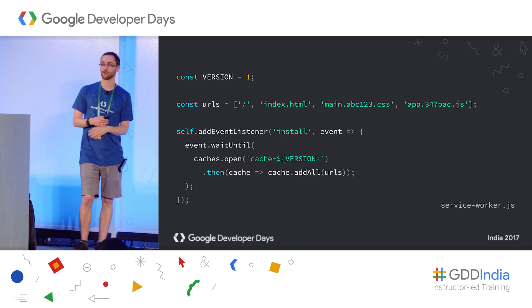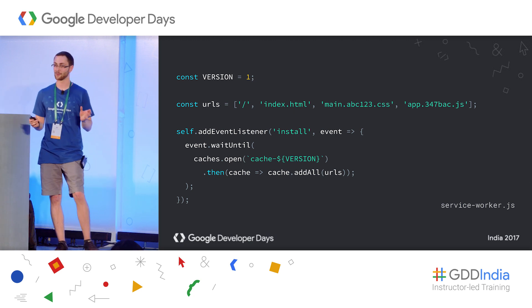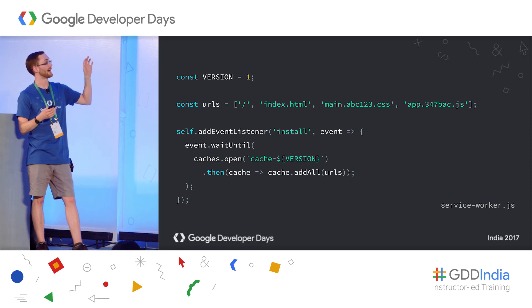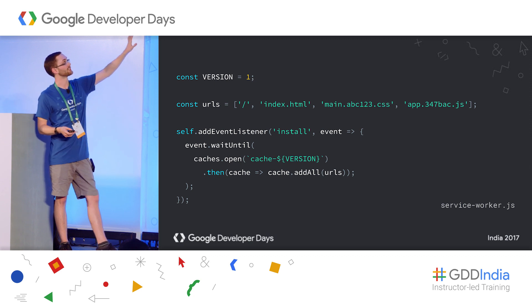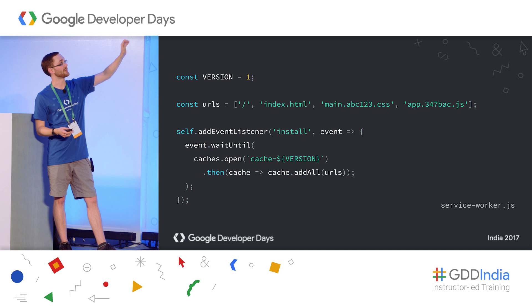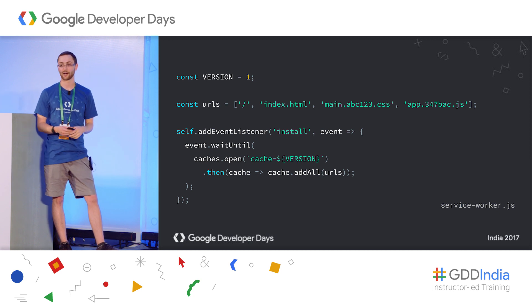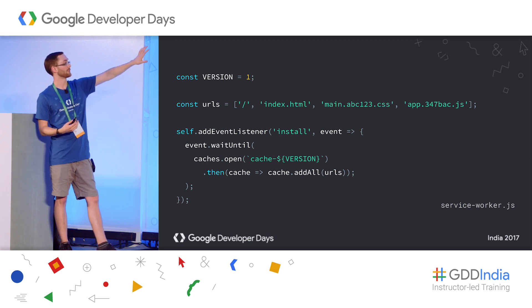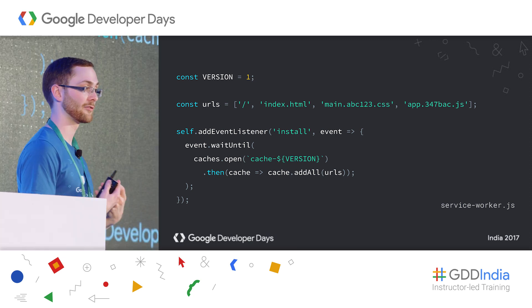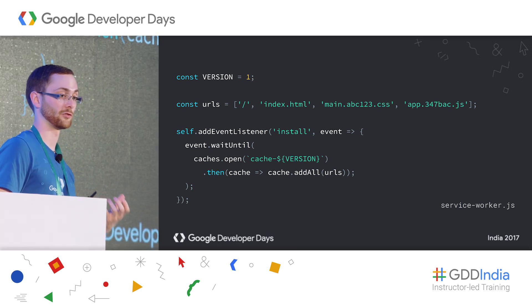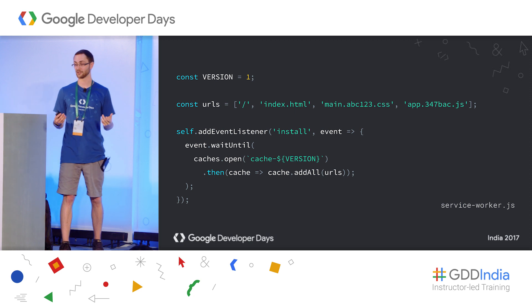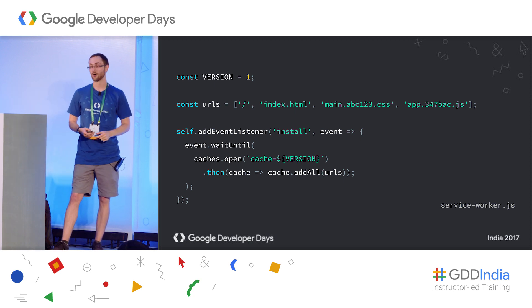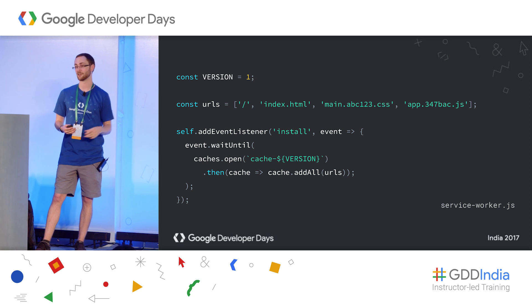For those unfamiliar, let's look at how pre-caching looks in a basic service worker API. If we had a simple site with HTML, CSS, and JavaScript, we'd create a versioned cache — specifying a version number and a list of all the app's resources. We'd add a listener for the install event, which fires the first time a user visits your site. During that install event, we open the version cache and put all those resources into it.